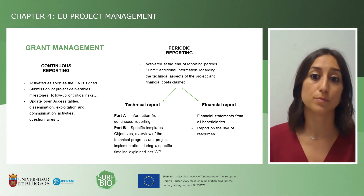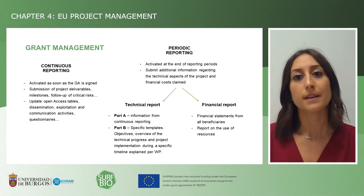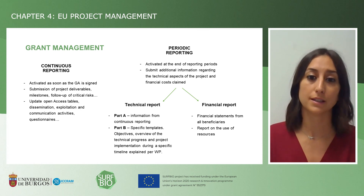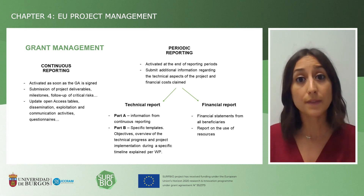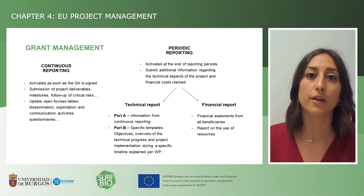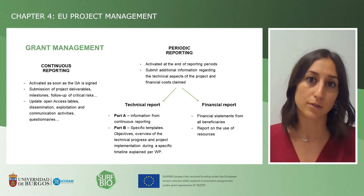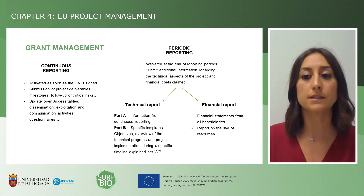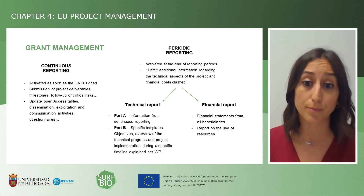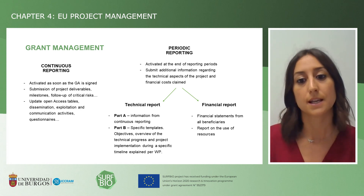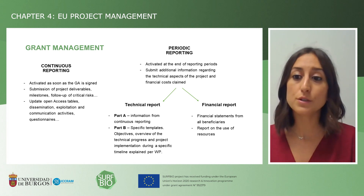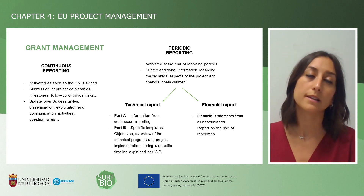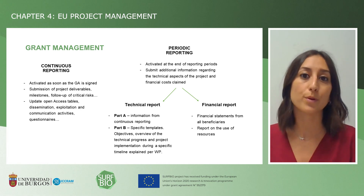The periodic reporting is divided in two parts: the technical report and the financial report. The technical report has Part A — the information uploaded in continuous reporting, such as deliverables, milestones, risks, and so on — and Part B, which is specific to periodic reporting. You use a specific template found in your EU portal area, where you explain the project objectives and give an overview of technical progress and project implementation per work package. The financial report states the financial statements of all beneficiaries and reports the use of resources.